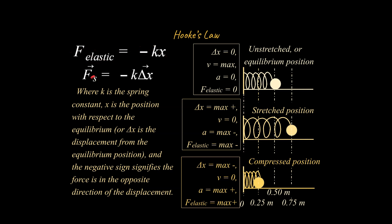Here's the official equation. In most high school physics textbooks it's written with x, but the AP version uses Δx, which I prefer — because x alone just means position, whereas Δx means displacement, which is a change in position from the equilibrium. In both cases there's a negative sign, indicating the force is in the opposite direction of the displacement. I'm going to put the practice problem on a second screencast since this one is already long — part two is coming right up, with a link in the upper right.